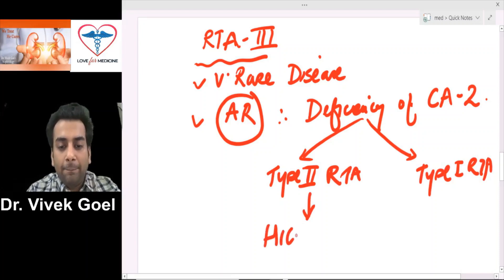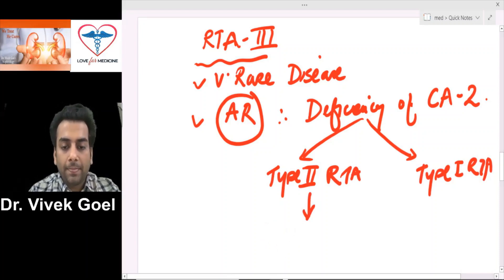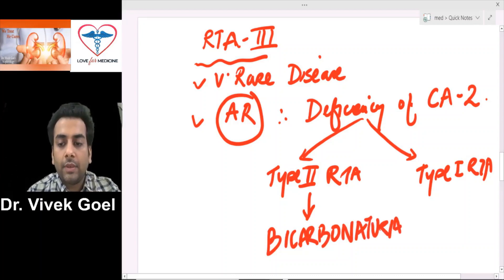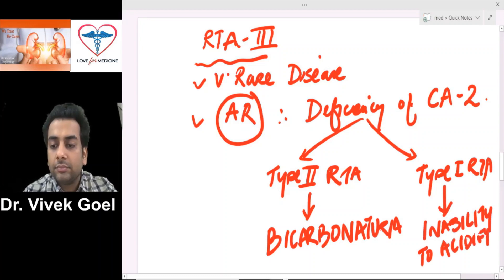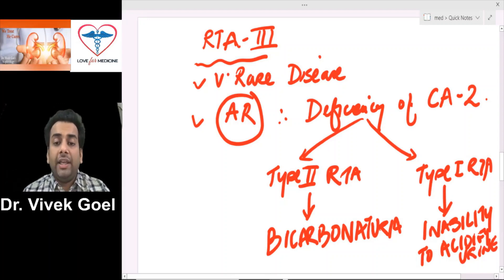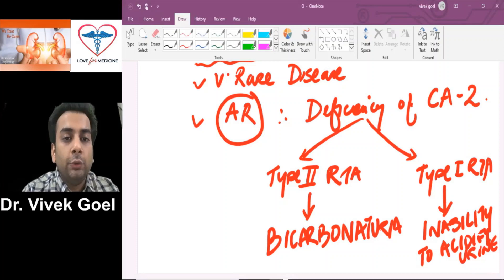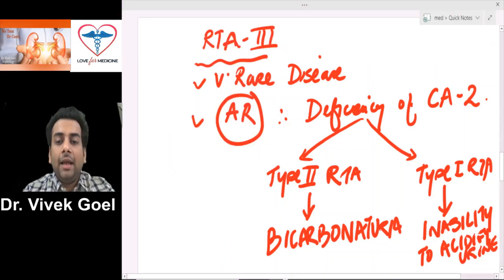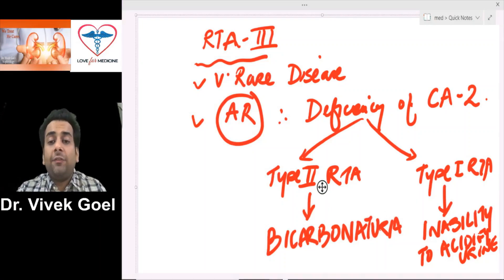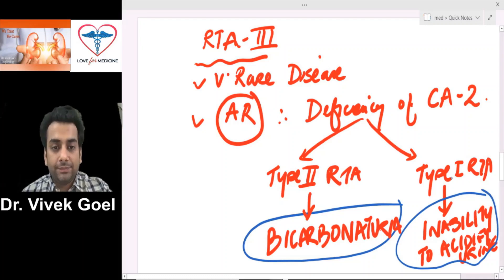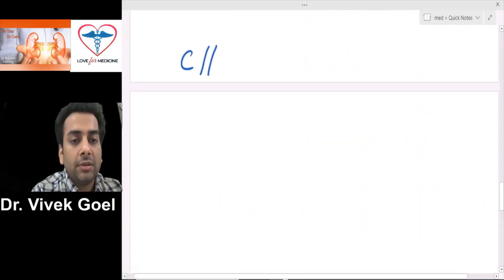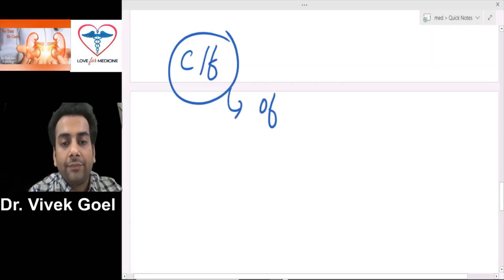Type 2 RTA is characterized by bicarbonaturia, because bicarbonate will not be absorbed. And Type 1 RTA leads to inability to acidify urine. In short, RTA Type 3 leads to a combination of features — basically a mix having both the features of Type 1 and Type 2 RTA — and the reason is very evident given the dual role of carbonic anhydrase 2.